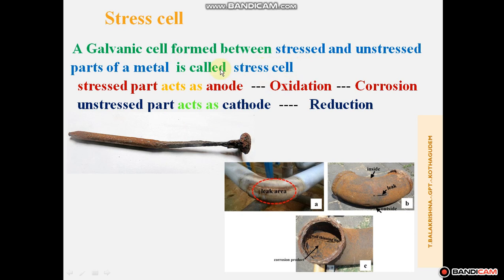This galvanic cell is formed within the same metal, but depending upon stress — one part is more stressed and acts as the anode, the other part is less stressed and acts as the cathode. In the bent pipe, the bent part is more stressed, so it acts as the anode and the remaining part acts as the cathode. Oxidation takes place at the bent part — that is called corrosion. The anode part undergoes corrosion. Remember: anode means oxidation, and oxidation means corrosion — the anode part undergoes corrosion easily. This is the Stress Cell.